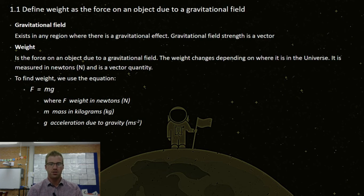Weight is the force on an object due to a gravitational field. The weight changes depending on where it is in the universe. It is measured in newtons and is a vector quantity.